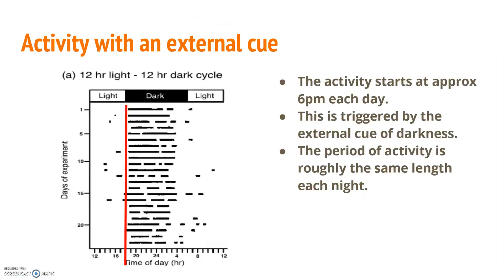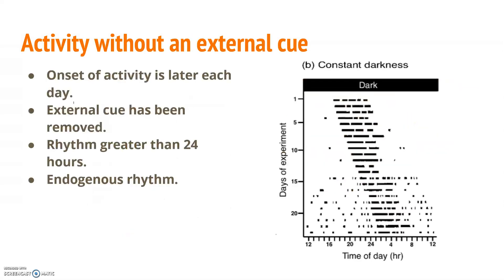If you get a question like this in your exam, my first tip is to draw on the graph. As you can see from the graph where my red line is, the squirrel's activity starts at the same time each day — this is 6 p.m. in the evening — and lasts for approximately the same length of time each night, i.e. 8 hours. The external cue of darkness is entraining the squirrel's internal clock to start at the same time each day, so that they aren't active until darkness actually occurs.